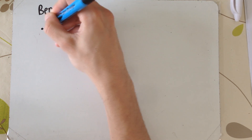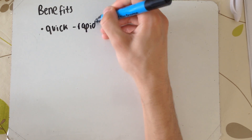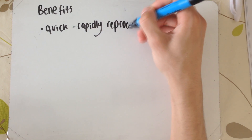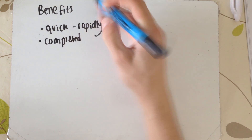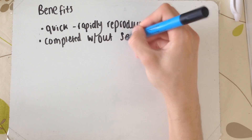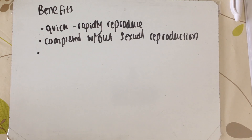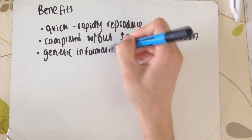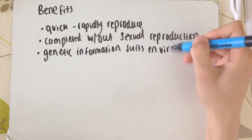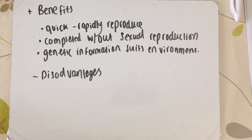There are a few benefits to asexual reproduction. The first being that it is quite quick — you can rapidly reproduce and produce large numbers of offspring. The next benefit is it's completed without a mate. If you can't find a mate, or if you're physically unable to breed sexually, you can asexually reproduce and have offspring. Also, if you're surviving well in your environment, all your offspring — having the same genes as you — should be able to survive equally well.